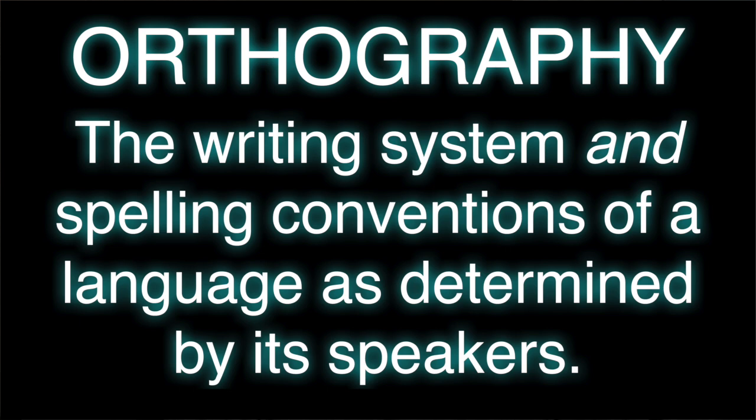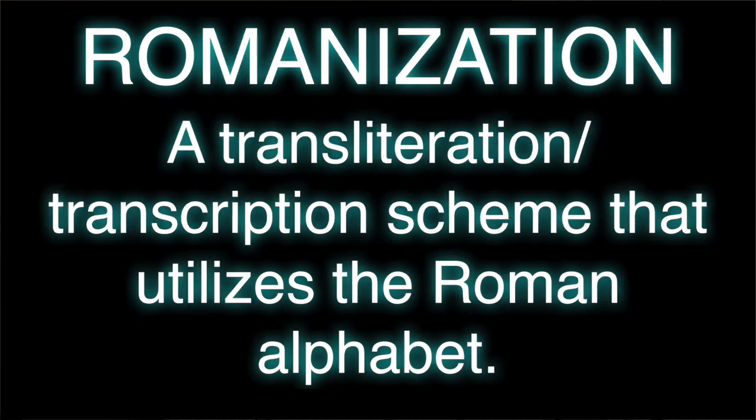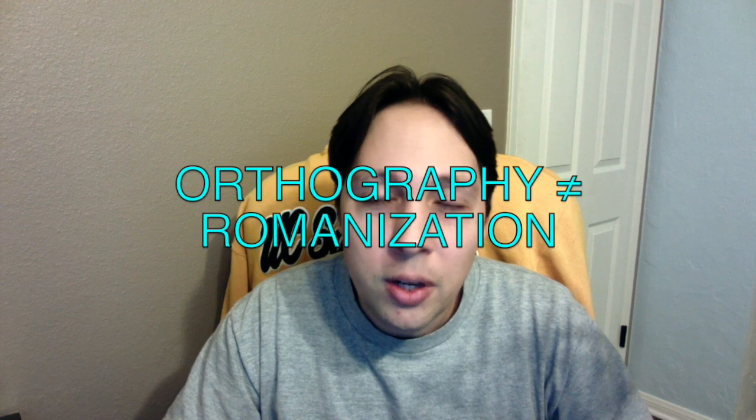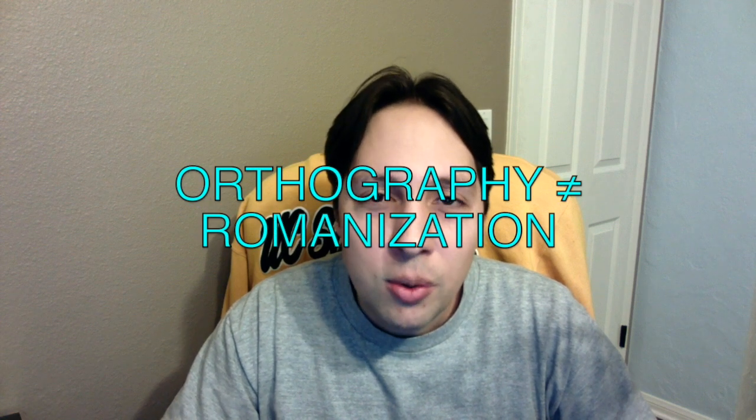Before I talk about Romanization systems, let me introduce two vocabulary items. First, orthography. Orthography is the writing system and spelling conventions used by a group of speakers to write their language. Romanization, on the other hand, is a transliteration system using the Roman alphabet. Something I want to make clear, though, is that the words Romanization and orthography are not synonymous.